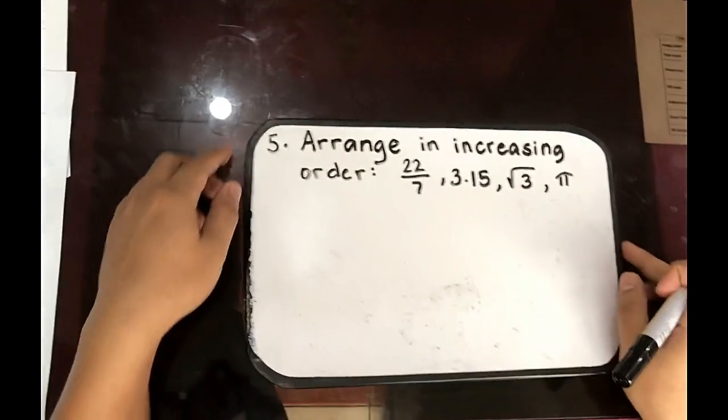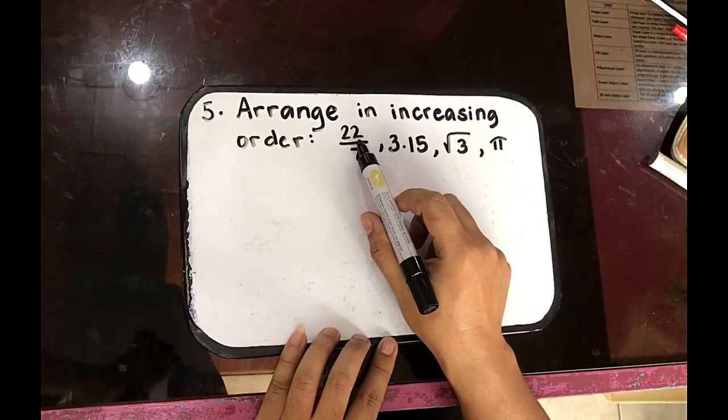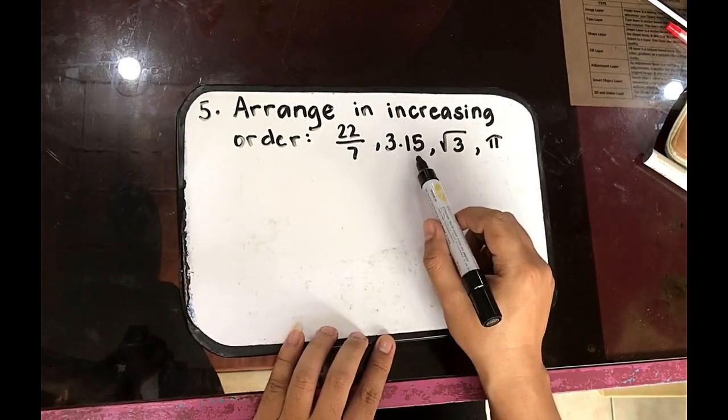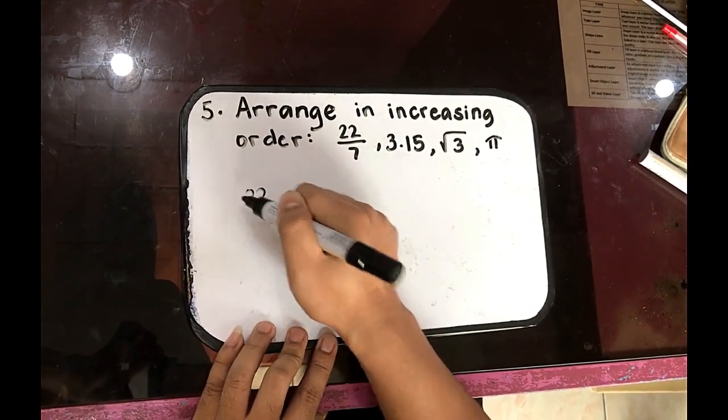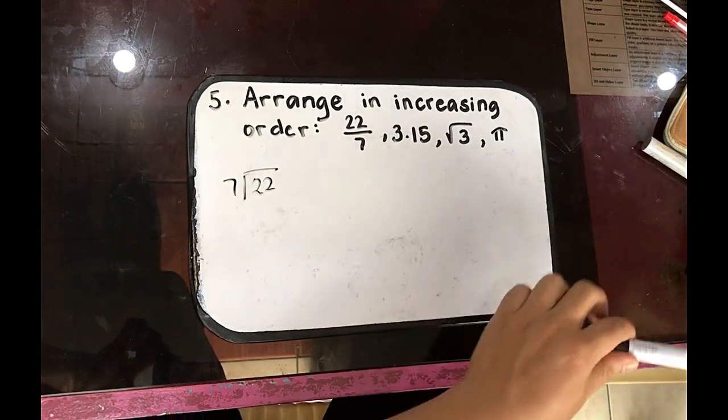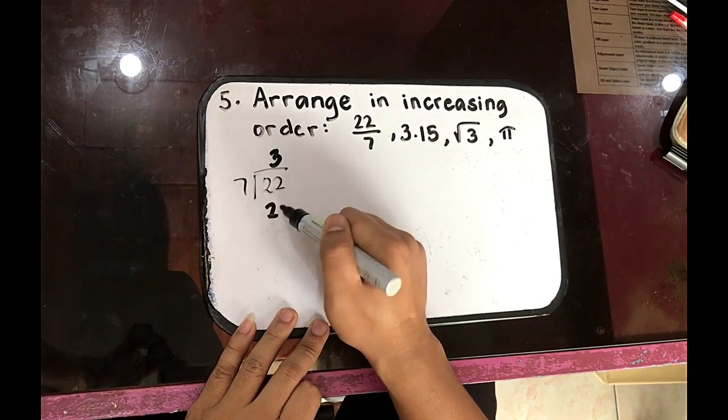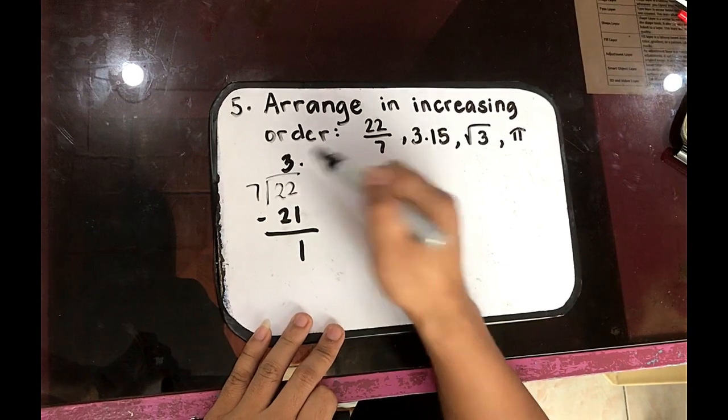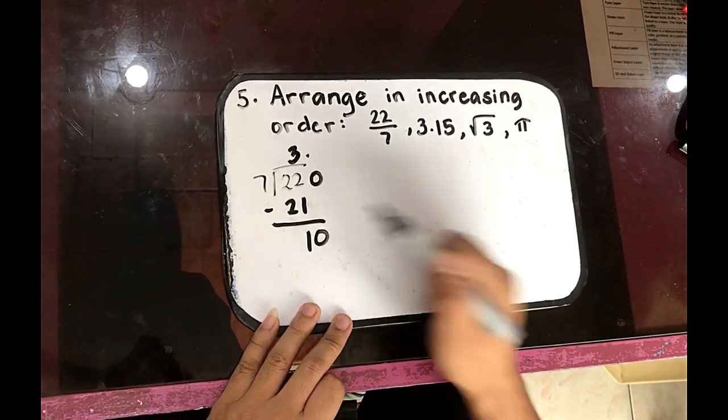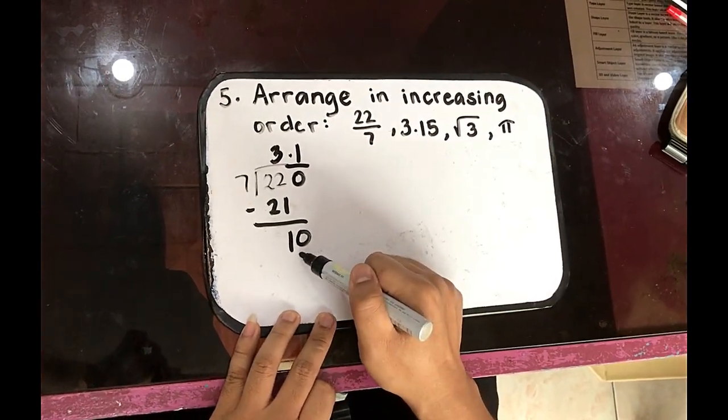Number 5. Arrange in increasing order. 22 over 7. So let us write into decimal. 22 divided by 7. So that is 7, 14, 21, 3, 21, subtract 1, 0, 0. So 3.1.